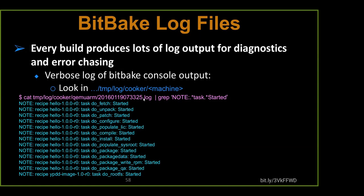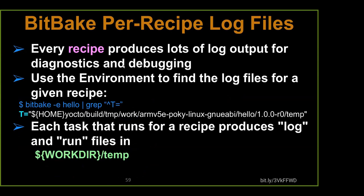Most of the time we're not really going to look at this — we're going to generally know where it's going to crash because BitBake will tell us. Every recipe does produce a lot of log output, which is useful for diagnostics and debugging. We can keep track of it all to look at differences between builds. There are some BB classes which allow us to look at build history and tell what changed.